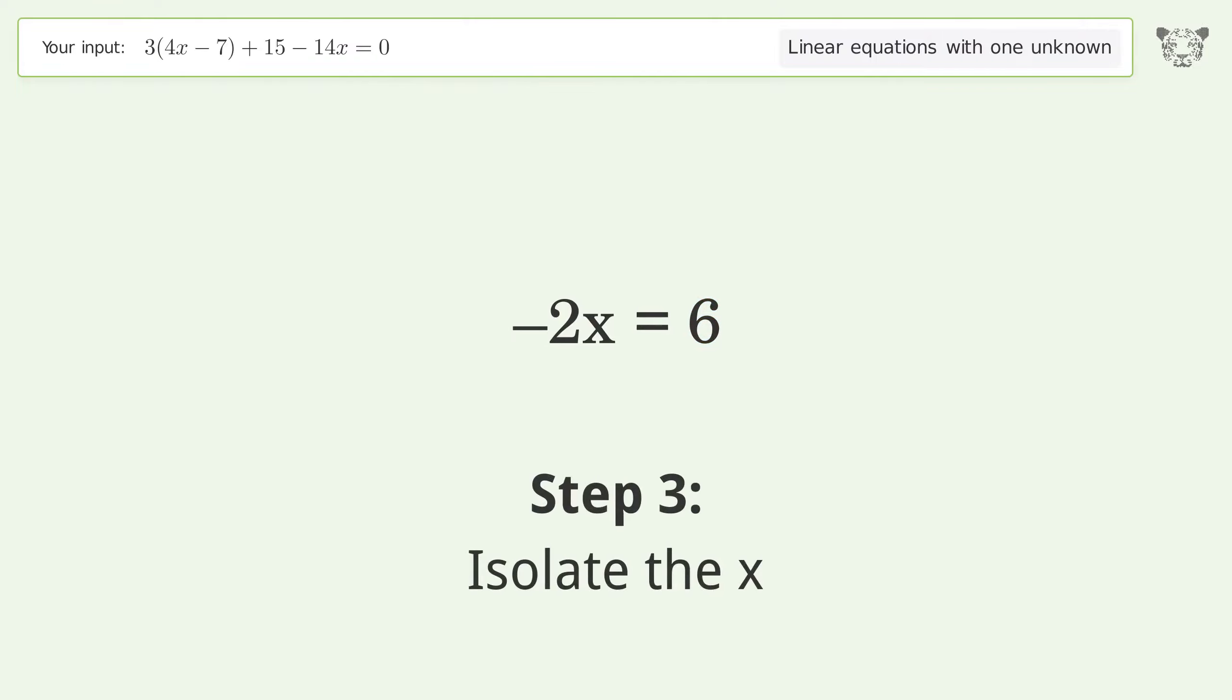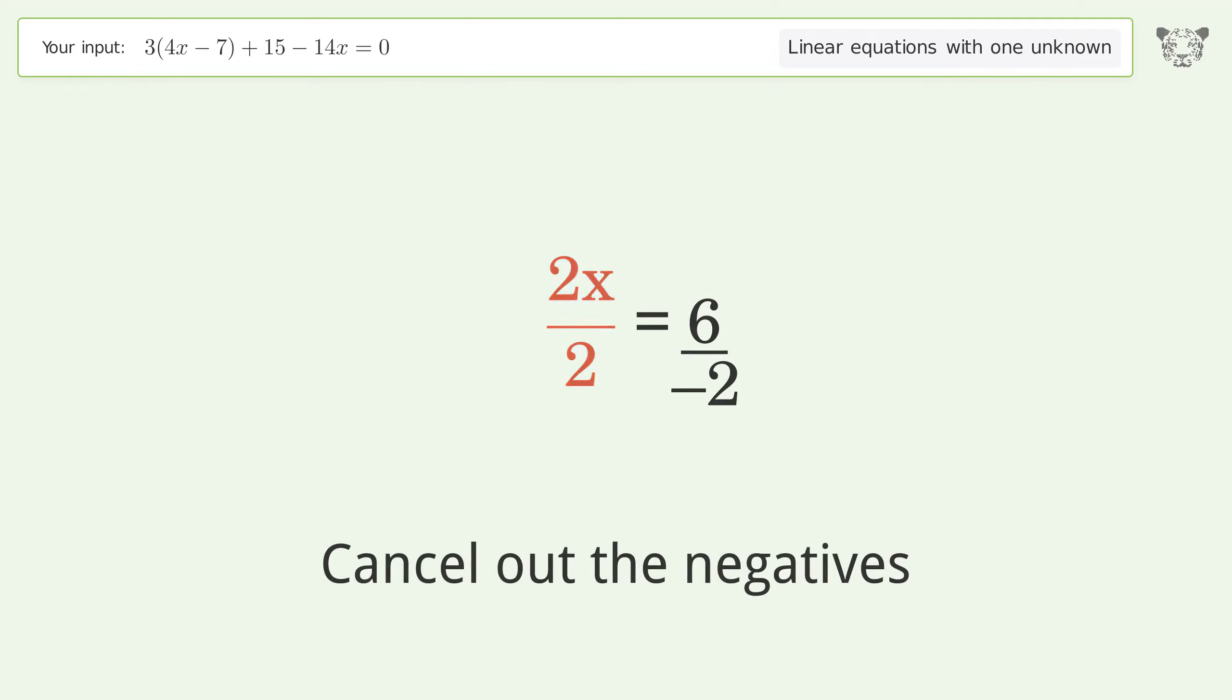Isolate the x by dividing both sides by negative 2. Cancel out the negatives and simplify the fraction.